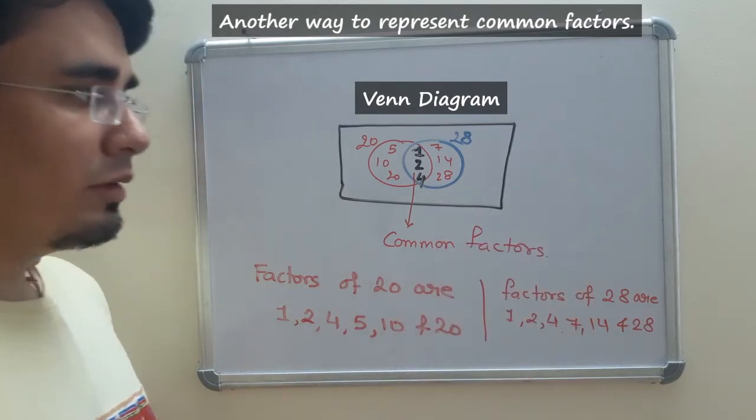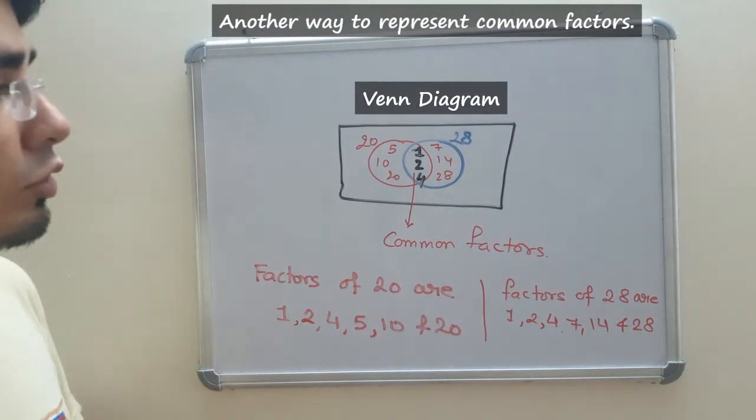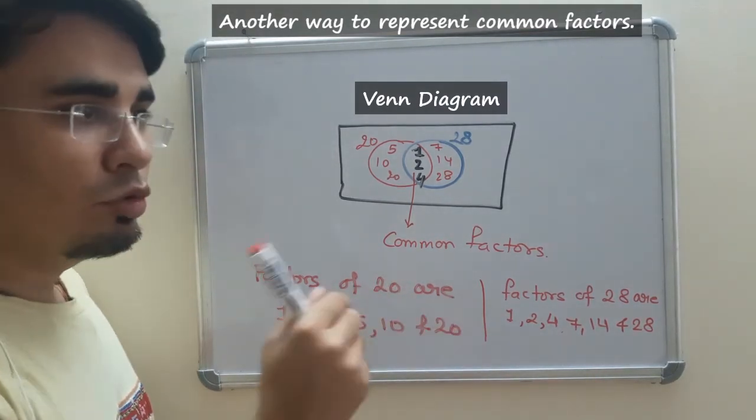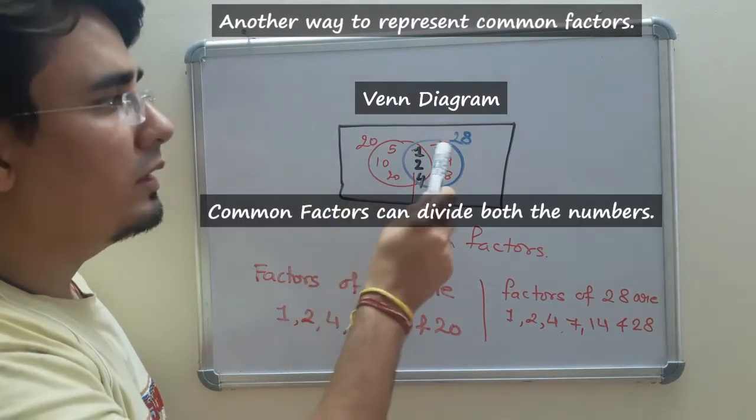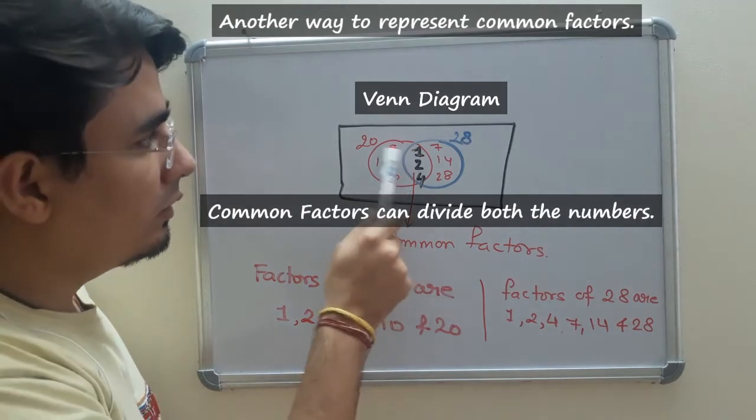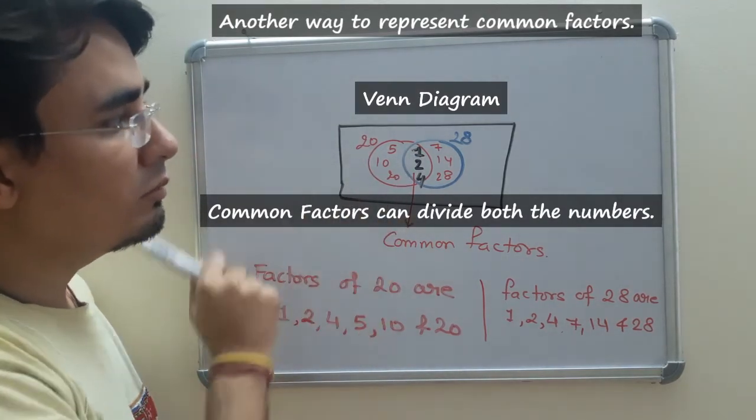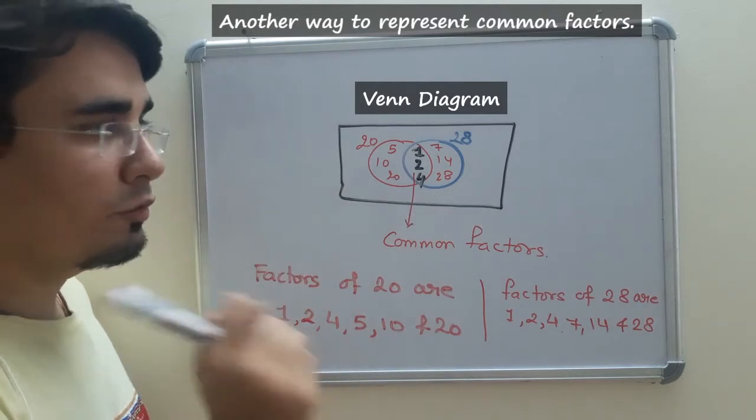Let us try to understand why we are so bothered about common factors. Common factors are those numbers which can divide both 20 and 28. Let us see. 20 is divisible by 1. Yes. 20 is divisible by 2. Yes. In the table of 2.